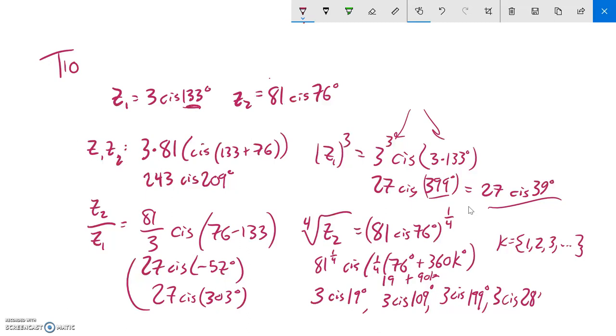3 cis 289. And if I add 90 to that, I'm going to be out of 360, they'll be back at that spot. So I have these four different possibilities for that root.